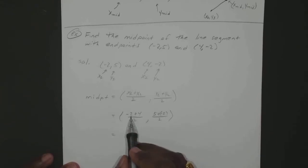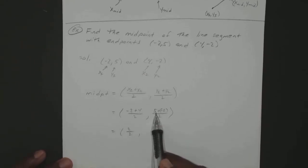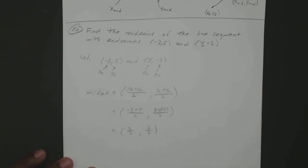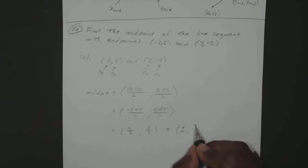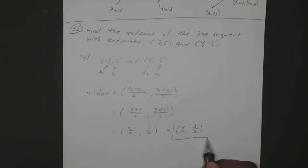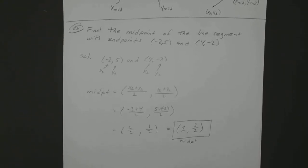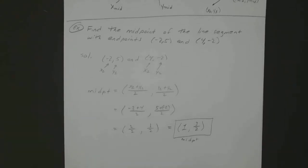So that's equal to negative 2 plus 4, which is positive 2, over 2, and 5 plus negative 2 is 3 over 2. So your midpoint would be 1 and 3 halves. Any questions on that one?